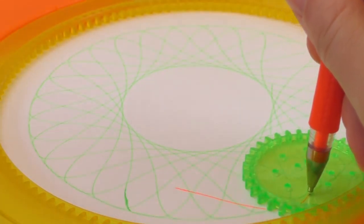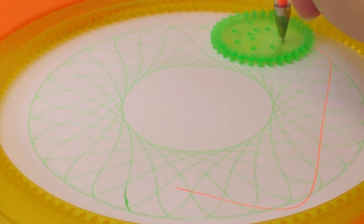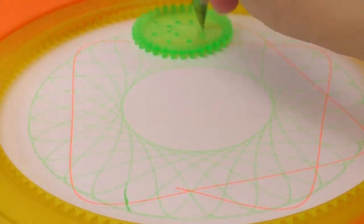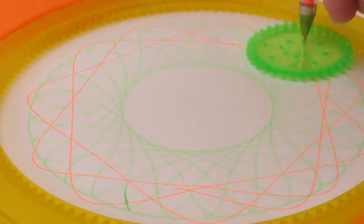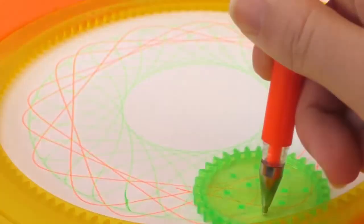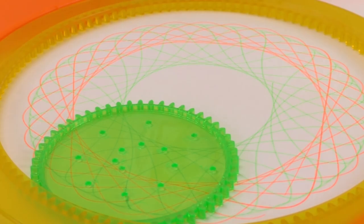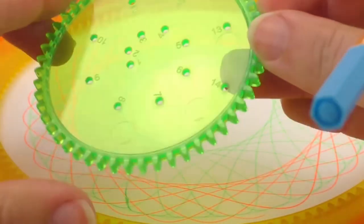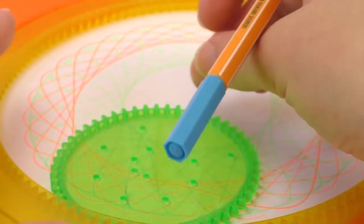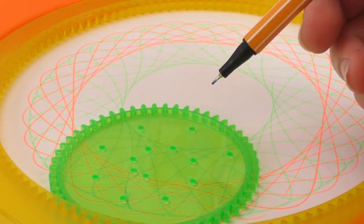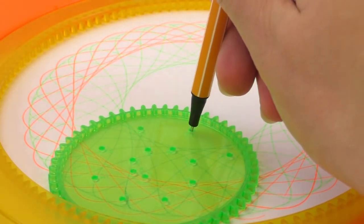And finally I'm going to use this big circle, and I'm going to choose a different color. I'm going to use hole number thirteen right here. Okay.